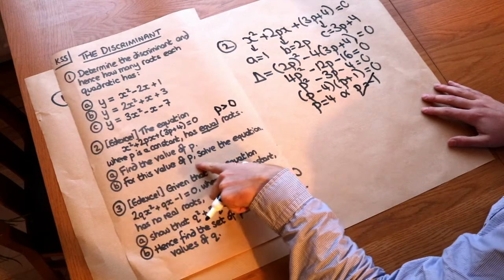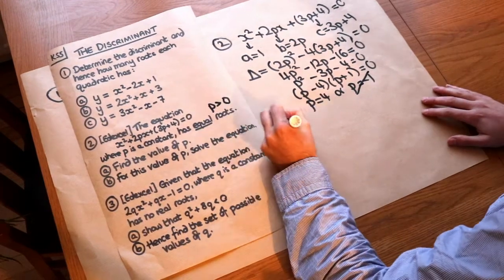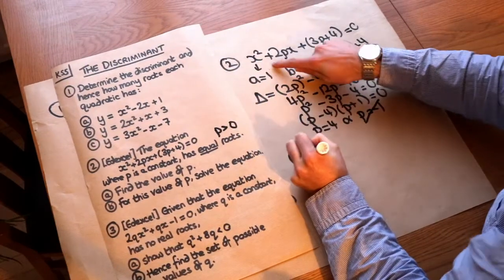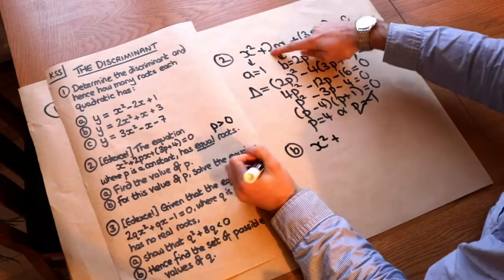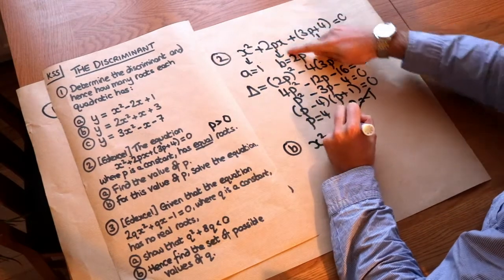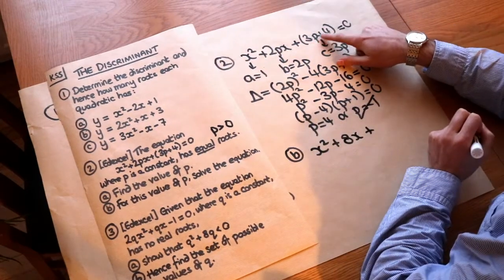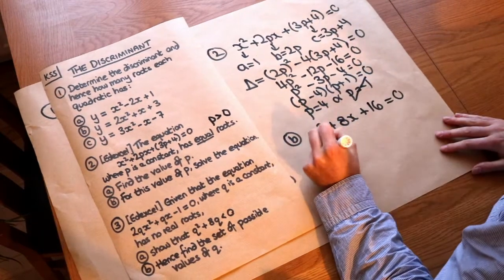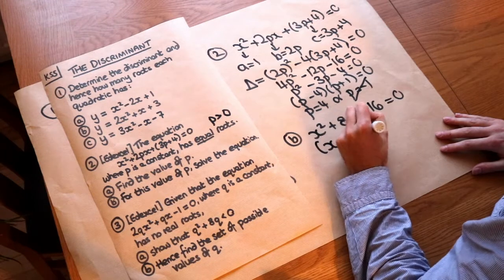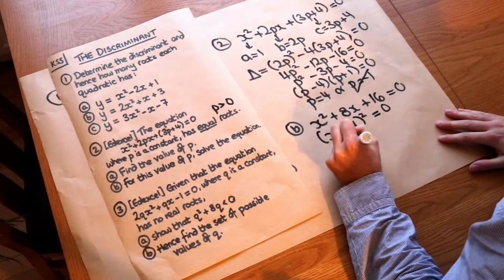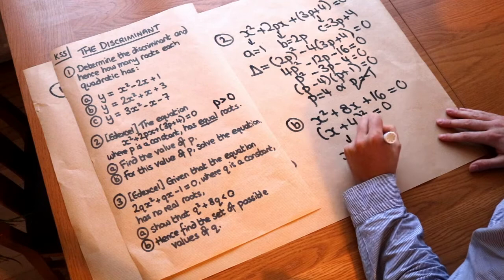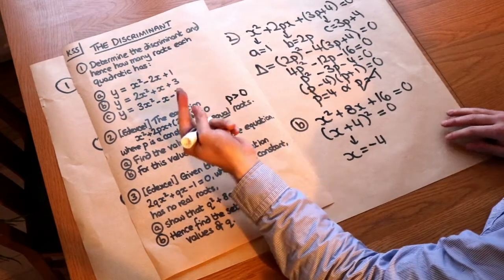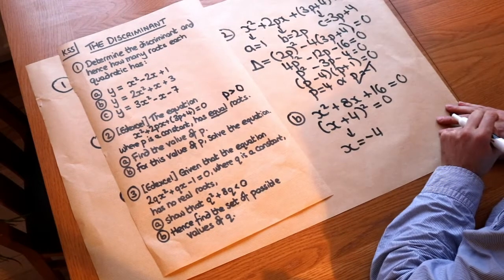And then it says for part b, for this value of p, solve the equation. So if p was 4, then we can substitute it into this. So we have x² + 2 × 4 = 8, so we have 8x. And 3 × 4 + 4 = 16. And then we can see that this factorizes as (x + 4)² = 0. And that means that x is only -4. And that's consistent with the question, because the question says we have equal roots, i.e. just one distinct root. And indeed, we only had one distinct root.